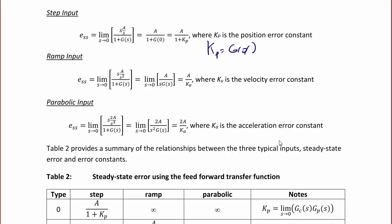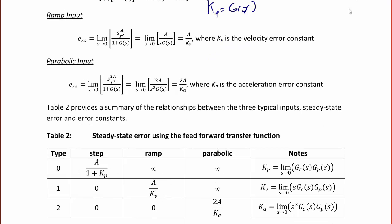Now let's summarize all of these characteristics in our table. When you have a type 0 system, which has no integrators, the step response error is A over 1 plus KP, and it cannot track a ramp or a parabola. When you have a type 1 system, the steady-state error for a step is 0, the ramp error is A over KV, and a parabolic input cannot be tracked, so the error is infinity.